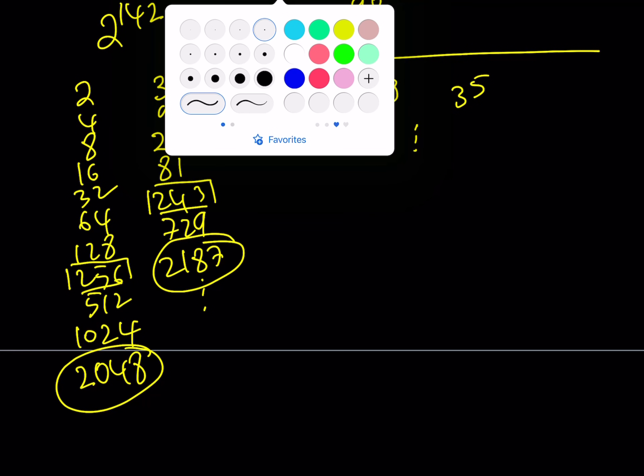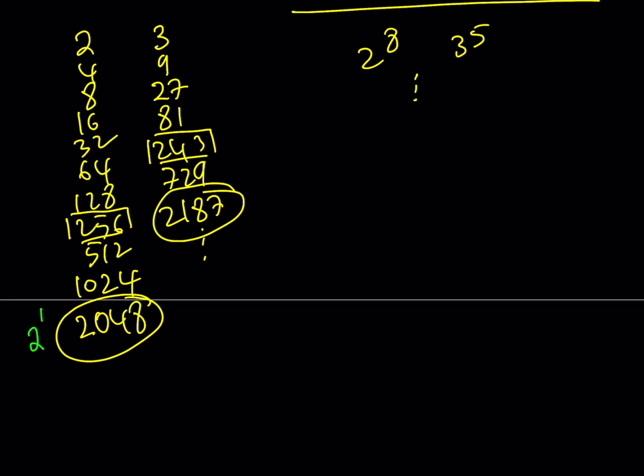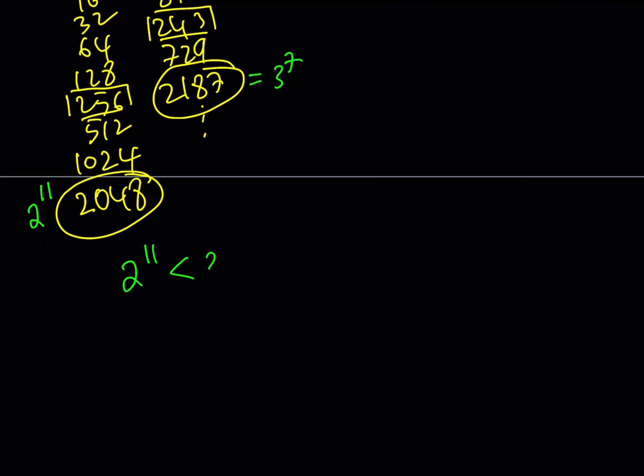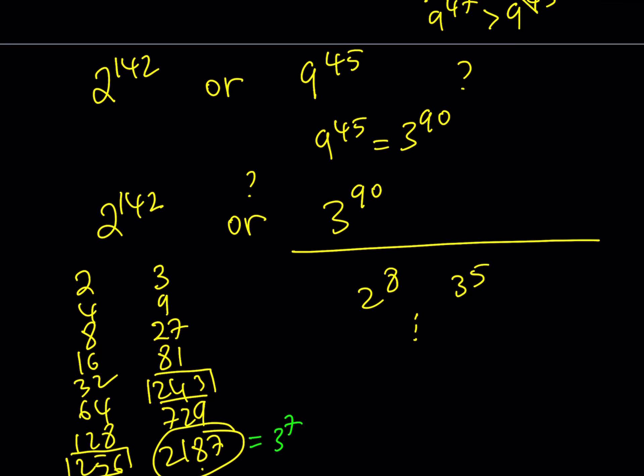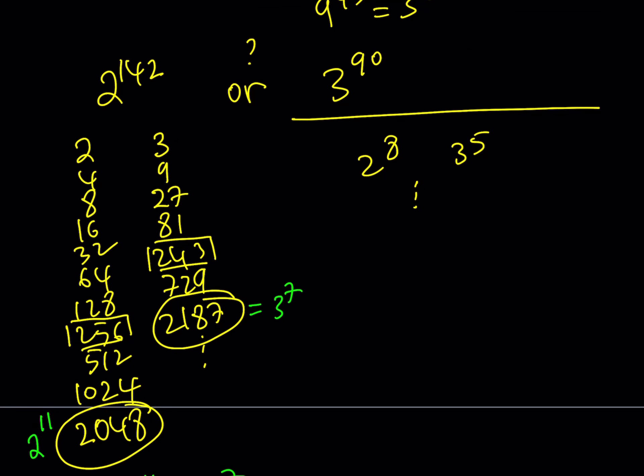So I can safely say that, and by the way, this is 2 to the power 11 and this is 3 to the power 7. This tells us that 2 to the power 11 is less than 3 to the power 7. My goal is to get to 142. I can't get there directly because it's not divisible by 11, but I can get to 143. Let's raise both sides to the power 13. That's going to give me 2 to the power 143 is less than 3 to the power 91. That's pretty close because we have 2 to the power 142 versus 3 to the power 90.